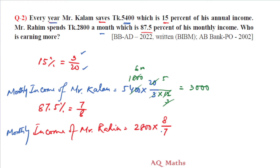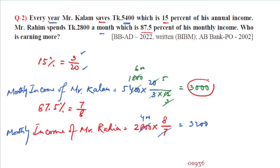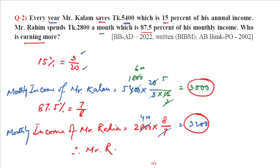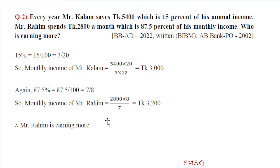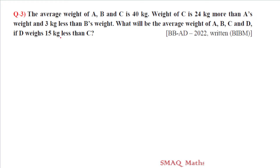Therefore Mr. Rohim is earning more. That is the answer. Moving to the next question: the average weight of A, B, and C is 40 kg. The weight of C is 24 kg more than A's weight and 3 kg less than B's weight.